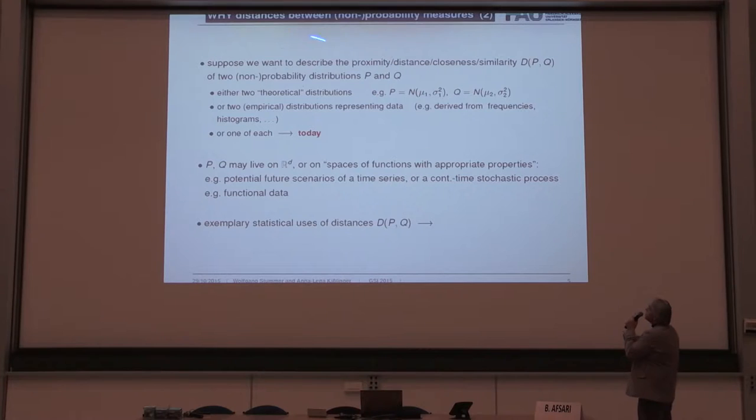So suppose we want to describe the proximity or distance between two probability distributions. They either may be two theoretical distributions, for instance you can measure the distance between two normal distributions with different parameters, or there can be two distributions which represent the data, so they are data-derived distributions. Or one is a data-derived distribution and the other one is a theoretical distribution, and this point of view we will take today.